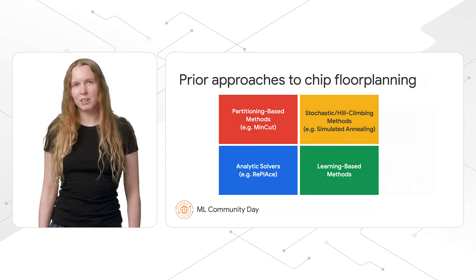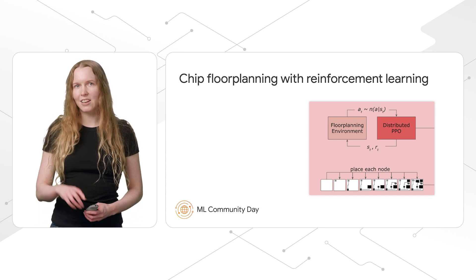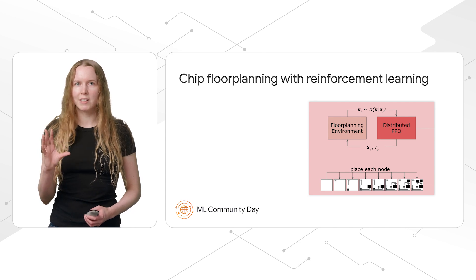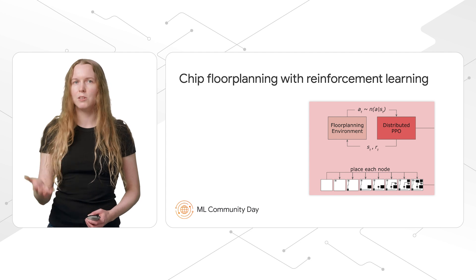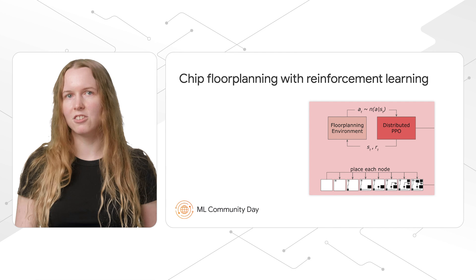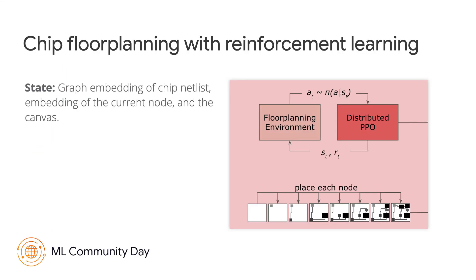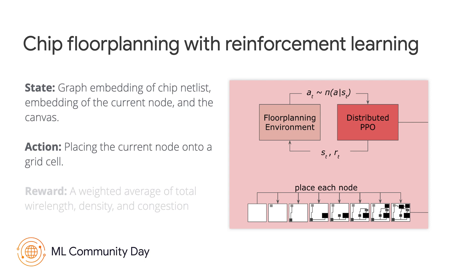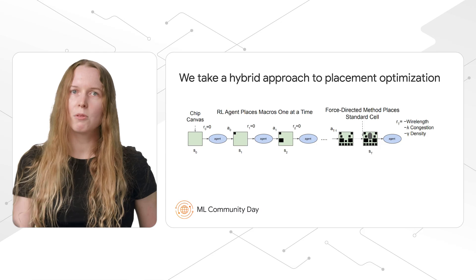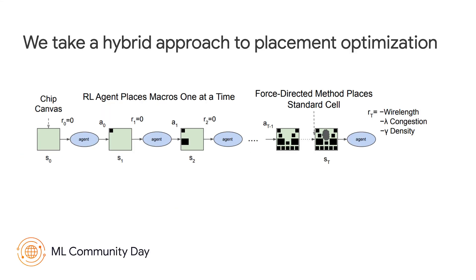More specifically, we take a deep reinforcement learning approach to the chip floor planning problem, where we train an agent to place the nodes of this chip netlist graph one at a time onto the canvas. After placing all the nodes, we get an approximate reward signal that we use to punish or reward a policy and get better and better at placing chips over time. At each time step, the state is a representation of the chip netlist, the current node to place next, and the canvas. The action is the decision about where to place that node, and the reward is a weighted average of approximate wire length, density, and routing congestion. We take a hybrid approach: the RL agent places the macros, or larger memory components, onto the canvas, and then we use a force-directed method to place the standard cells so that we can quickly evaluate the quality of the placement.